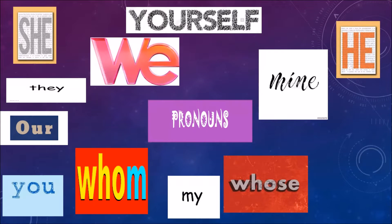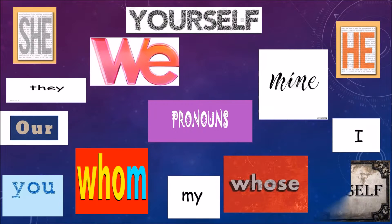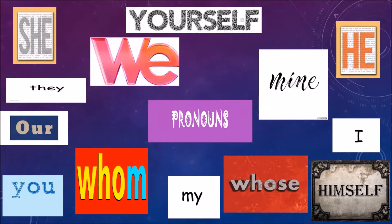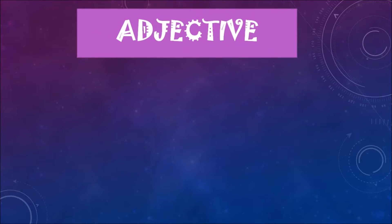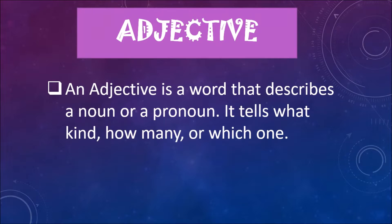These are all the examples of pronoun. Next is adjective. An adjective is a word that describes a noun or a pronoun. It tells what kind, how many, or which one. These are all the examples of adjective.